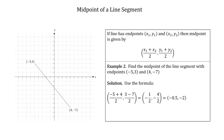So the midpoint is (−0.5, −2). Drawing this onto the diagram, −0.5 on the x-axis and −2 on the y-axis — where the two dotted lines meet is the midpoint, and once again it does look like it's halfway along the line.